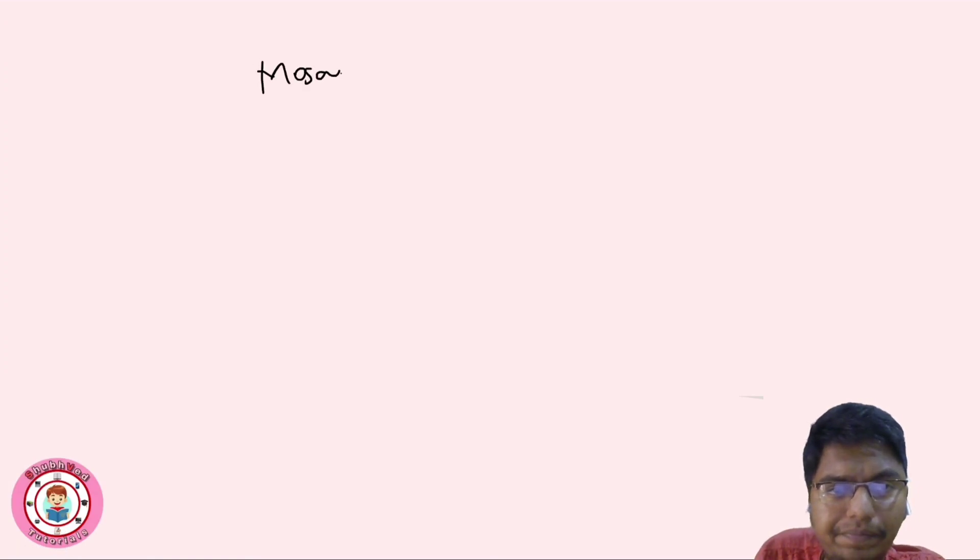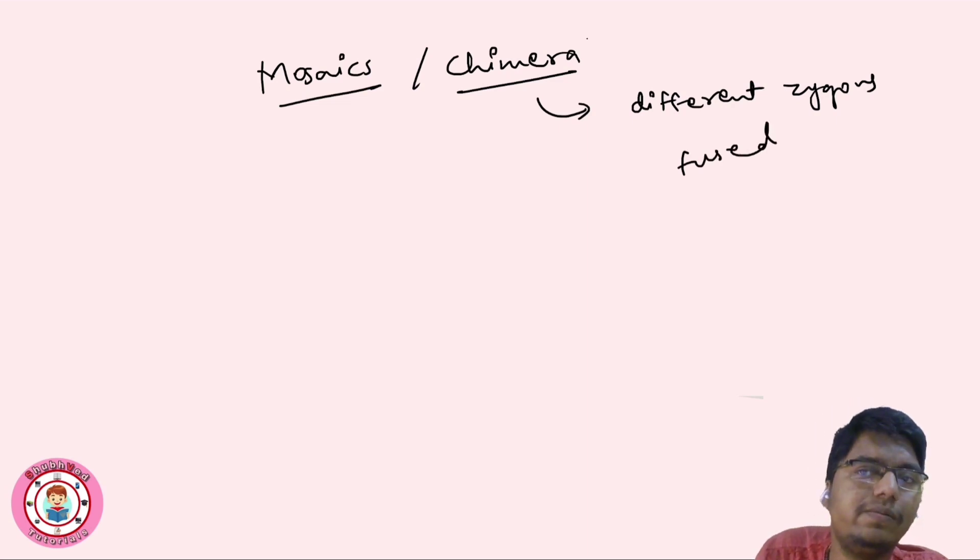Now mosaic and chimera, these are two different words. Chimera involves different zygotes fused, involving cell types from different zygotes. In mosaic, there is a single zygote. Cells from single zygote, and here cells from multiple zygotes. This is basically the difference between mosaic and chimera.